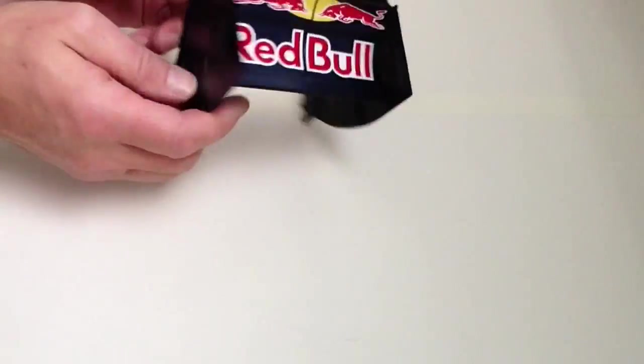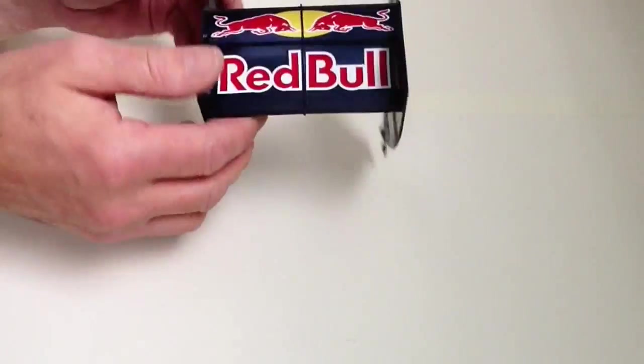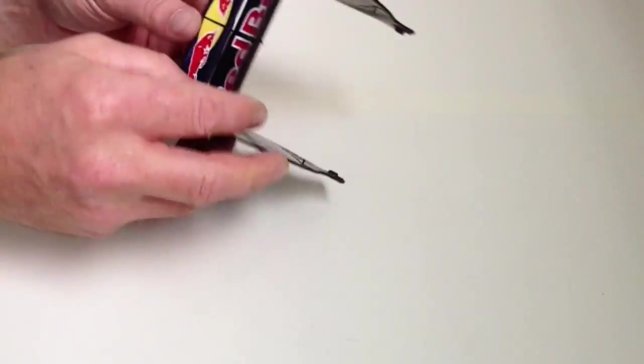Once you've done that, fit the other side using the other two 6mm screws, as you can see here.